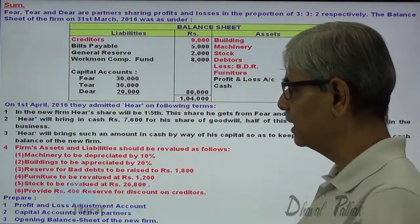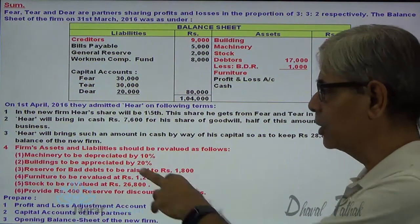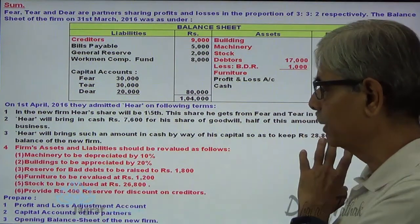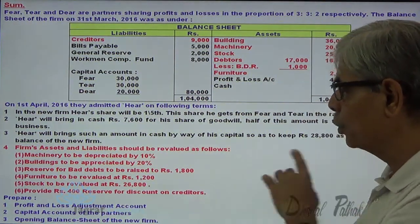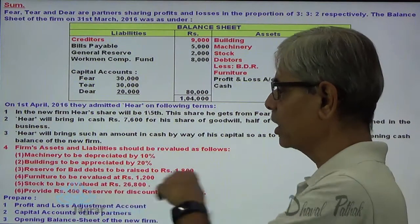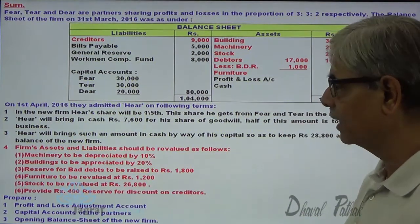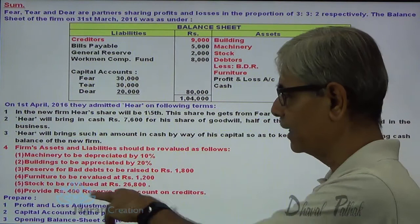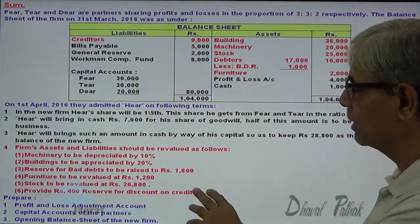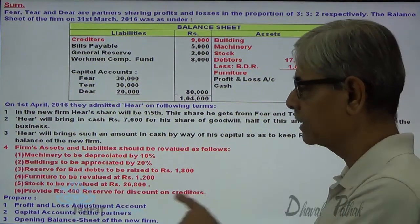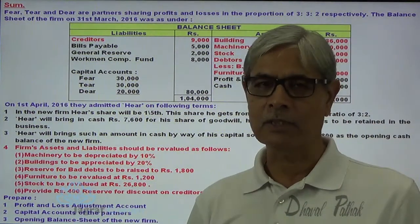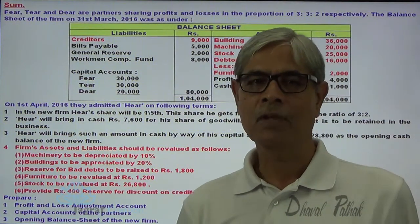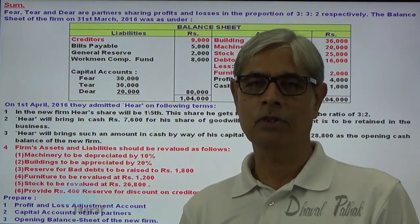The firm's assets and liabilities should be revalued as follows: machinery to be depreciated by 10%, building to be appreciated by 20%, reserve for bad debts to be raised to ₹1,800, furniture to be revalued at ₹1,200, stock to be revalued at ₹26,800, and provide ₹400 for reserve for discount on creditors. You are required to prepare the profit and loss adjustment account, capital account, and the balance sheet of the new firm after admission.